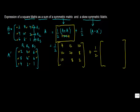Similarly we find out A minus A-transpose: 2 minus 2 gives 0, 4 minus 8 gives minus 4, 6 minus 4 gives 2. Then 8 minus 4 gives 4, 10 minus 10 gives 0, 6 minus 2 gives 4. Then 4 minus 6 gives minus 2, 2 minus 6 gives minus 4, and 1 minus 1 gives 0.